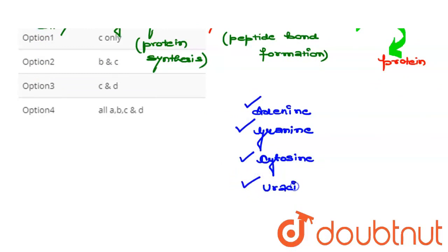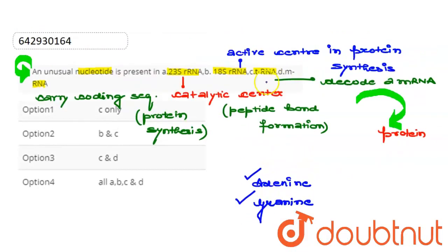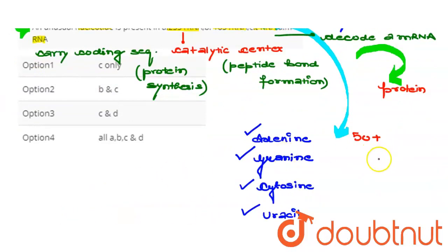These nucleotides are present in them, but in the options, basically, if we talk about tRNA here, tRNA has 50 plus modified nucleotides.